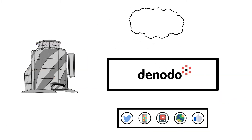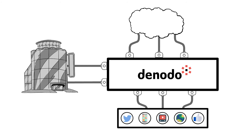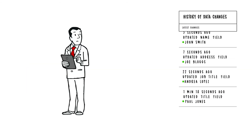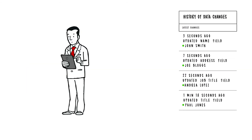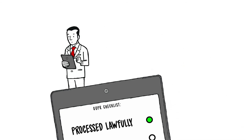Data virtualization provides this capability by creating an abstract data layer, which sits between your consuming applications and your data sources. It connects rather than copies your data sources, making them accessible from one single layer. Data virtualization allows you to monitor who is touching the data and keep track of the queries run against the data sources.